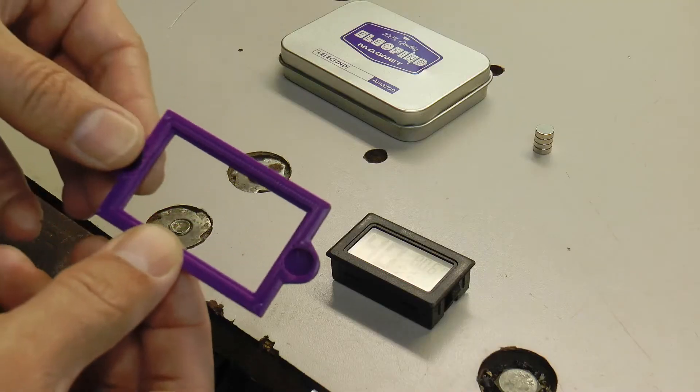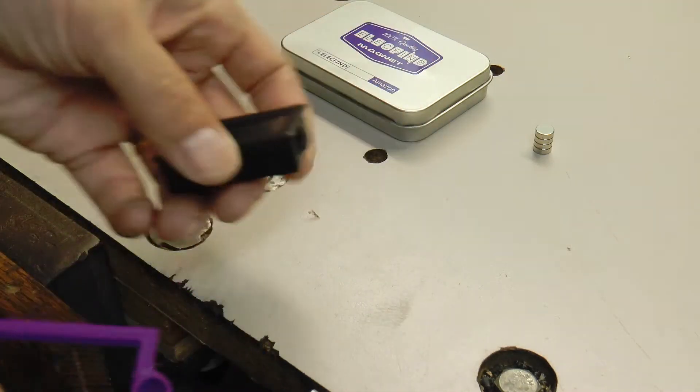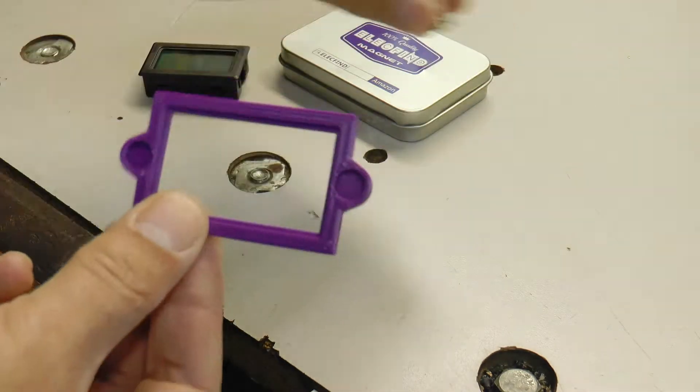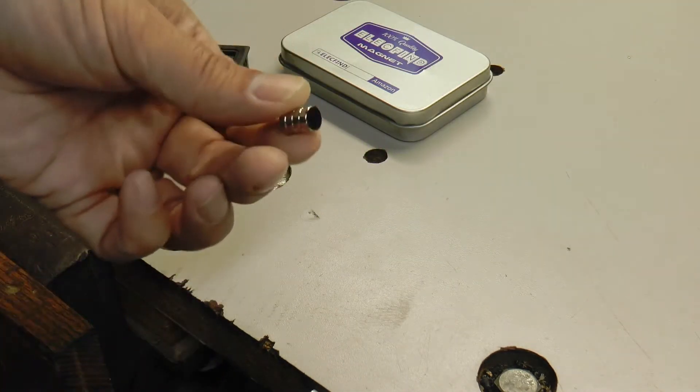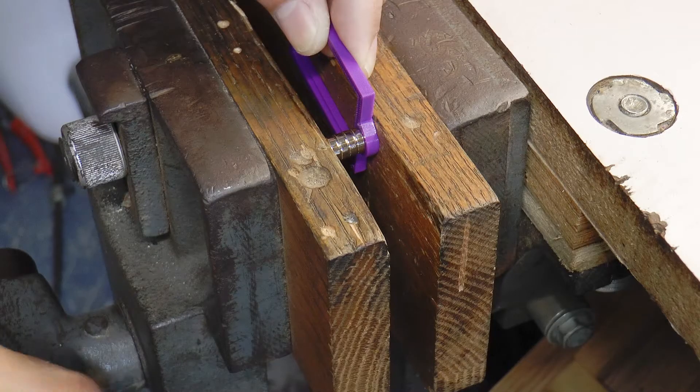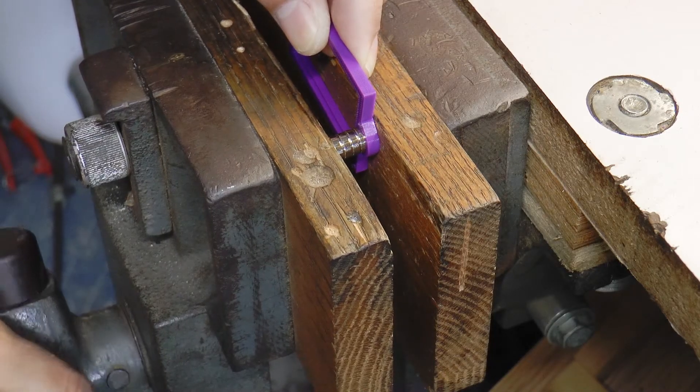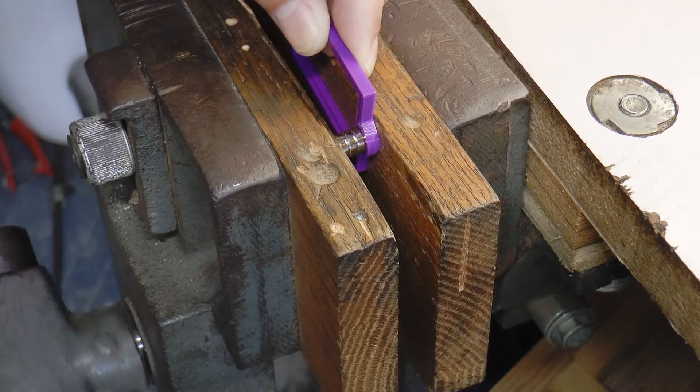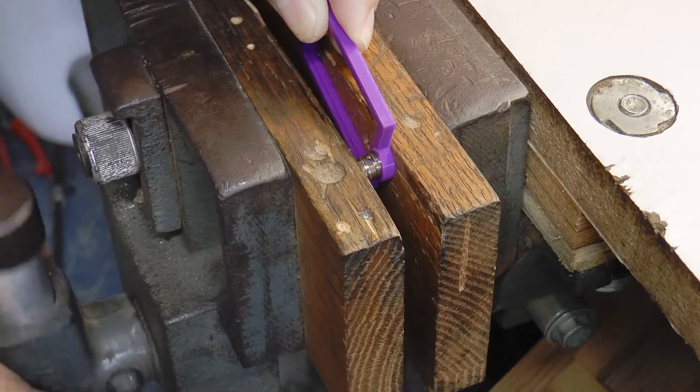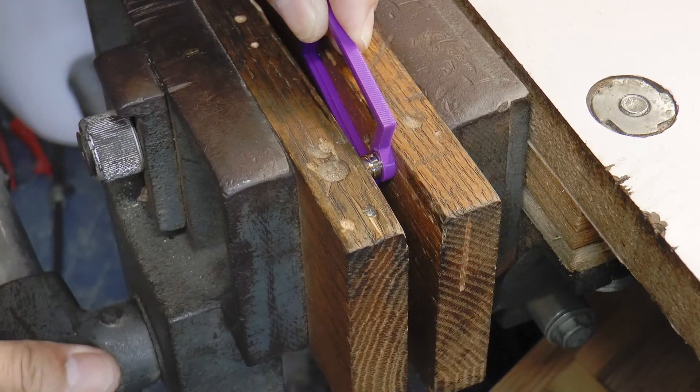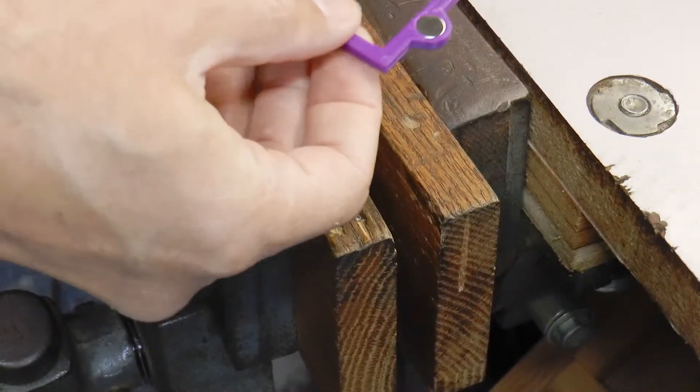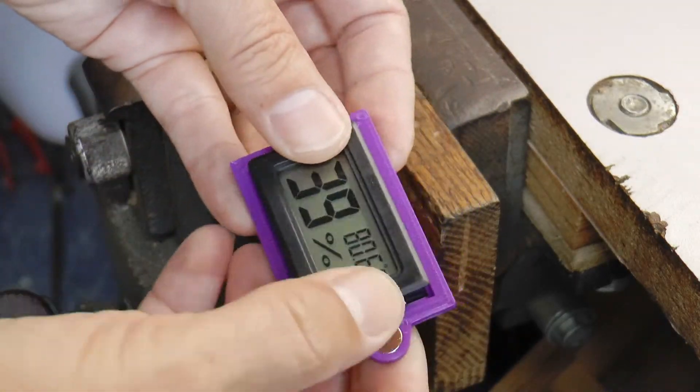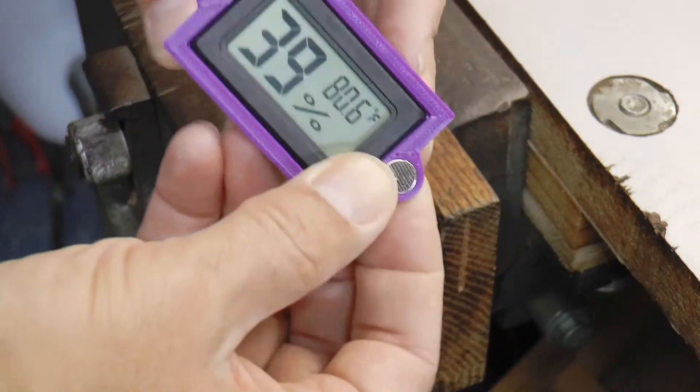This 3D printed frame will hold this inexpensive hygrometer. The frame is held in place with some rare earth magnets. I use my vise to press the magnets into the pockets in the frame. Then the hygrometer can be snapped into place like that.